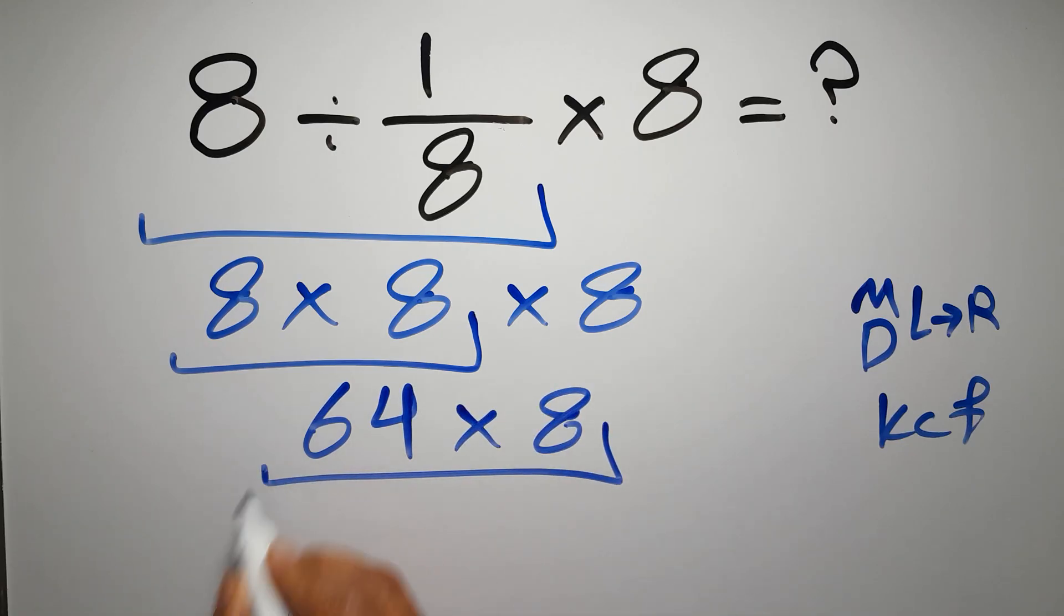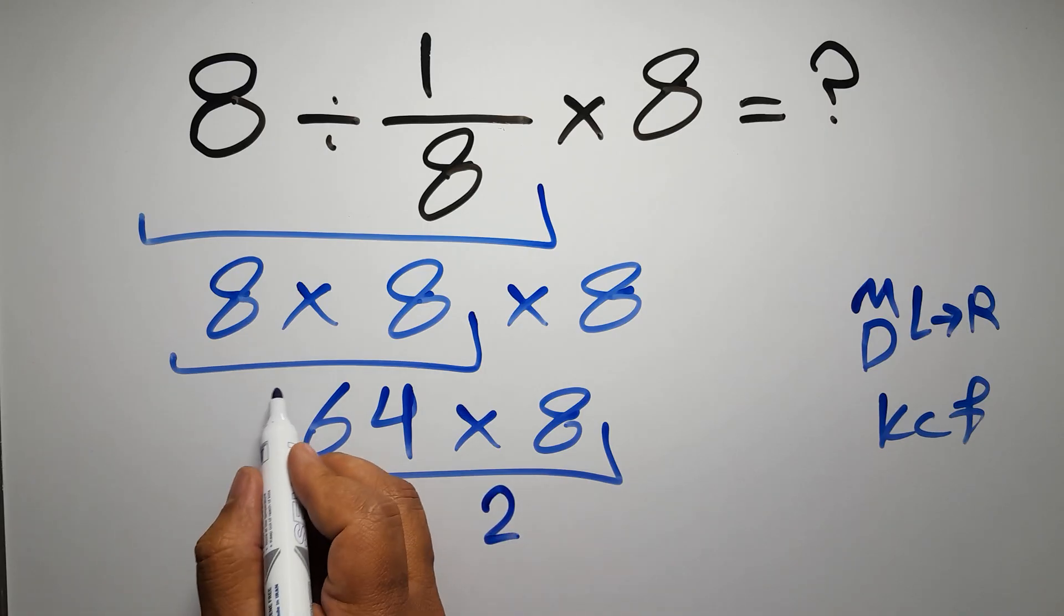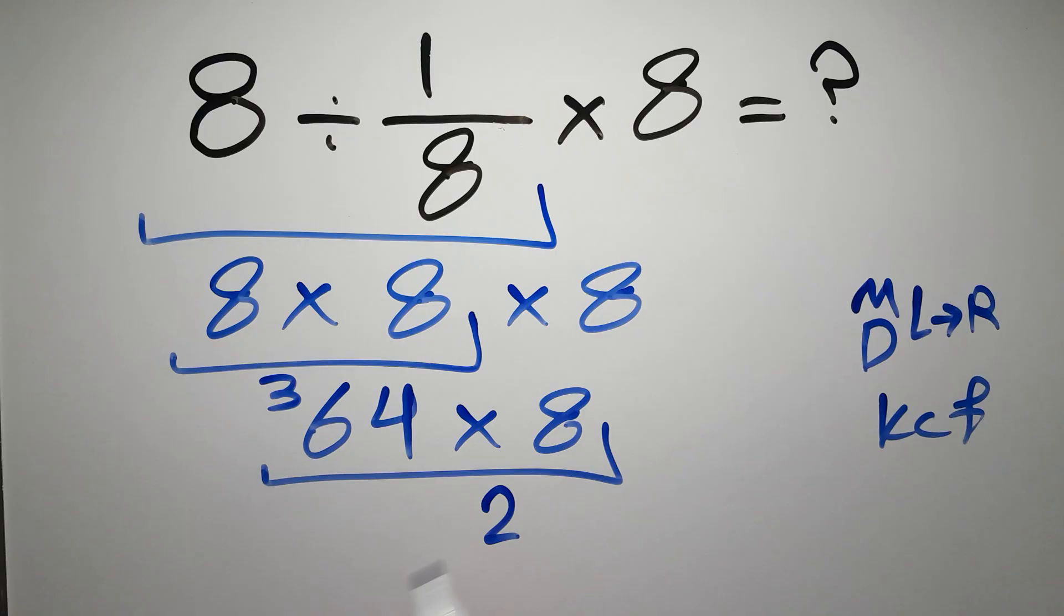8 times 4 gives us 32. We write 2 here and carry 3 here. 8 times 6 gives us 48, and 48 plus 3 gives us 51. So we have 512.